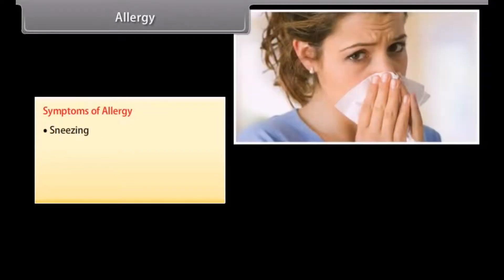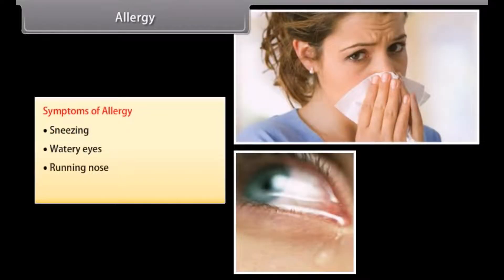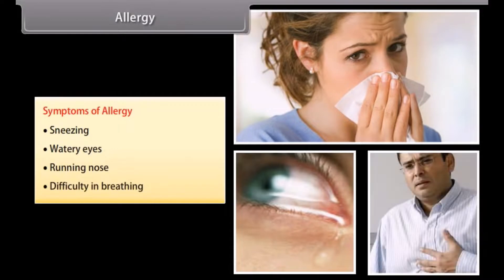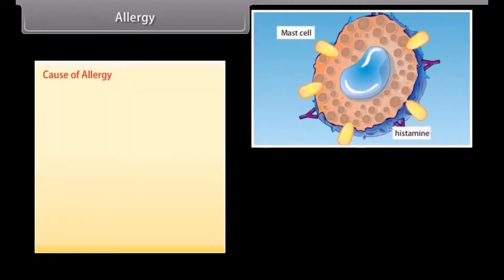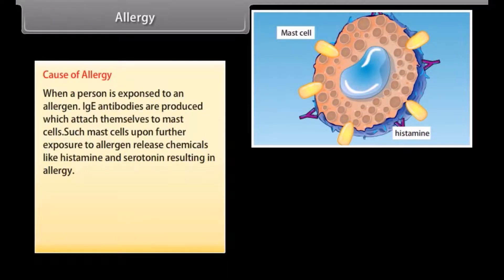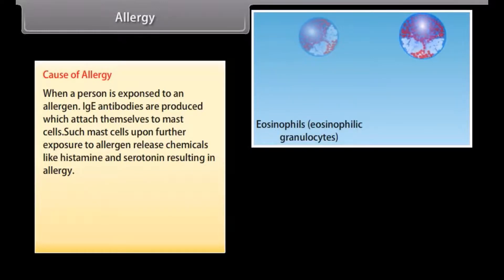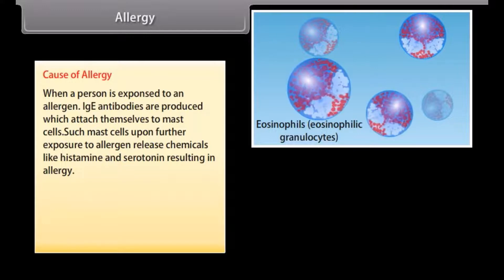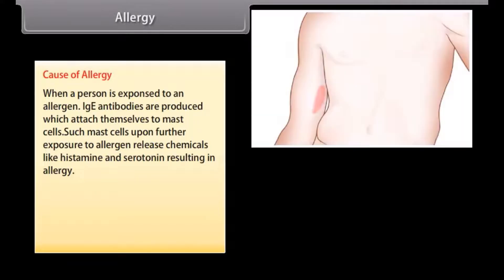Symptoms of allergy include sneezing, watery eyes, running nose, and difficulty in breathing. When a person is exposed to an allergen, IgE antibodies are produced which attach themselves to mast cells. Such mast cells, upon further exposure to the allergen, release chemicals like histamine and serotonin, resulting in allergy.